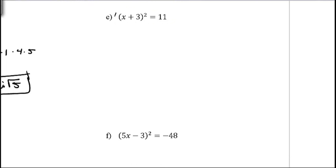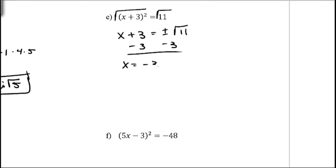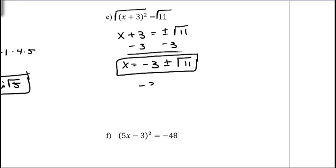The first thing we want to do is take the square root on both sides. The square root and the square cancel each other out, giving x + 3 = ±√11. Then subtract 3 from both sides to get x = -3 ± √11. You can't simplify this further because you can't take the square root of 11. In MyMathLab, it will probably want you to enter two answers separately: -3 + √11 and -3 - √11.